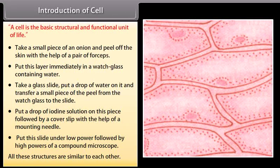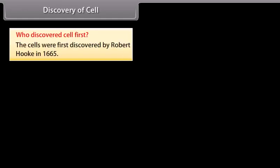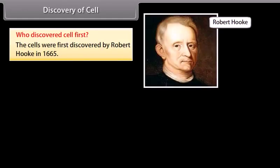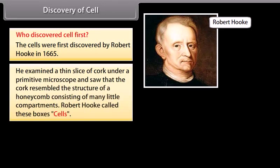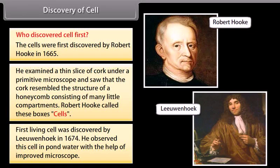Who discovered the cell first? Cells were first discovered by Robert Hooke in 1665. He examined a thin slice of cork under a primitive microscope and saw that it resembled the structure of a honeycomb consisting of many little compartments. Robert Hooke called these boxes 'cells.' The first living cell was discovered by Leeuwenhoek in 1674; he observed this cell in pond water with the help of an improved microscope.